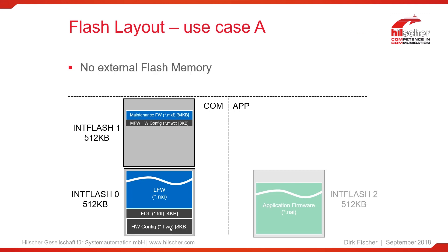The HWC file holds information about the pinning, SDRAM parameters, the host interface configuration, and so on. The next block is just 4 KB in size and is called Flash Device Label, file suffix FDL. This is a configuration block for the firmware and software, and it contains individual unique data for each device like MAC addresses or serial numbers — so in production you have to create individual FDLs for each device. The remaining area in Flash 0 is used to store the actual firmware, which we call LFW — loadable firmware.